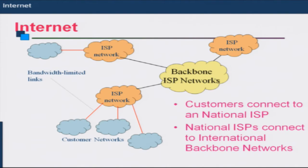The way internet is architected is the following. Every customer has a customer network. Every organization has got its own network, and we have talked about different architectures used in setting up different types of networks. These customer networks connect to what are called ISPs or internet service providers. There are two types: national ISPs and international ISPs.